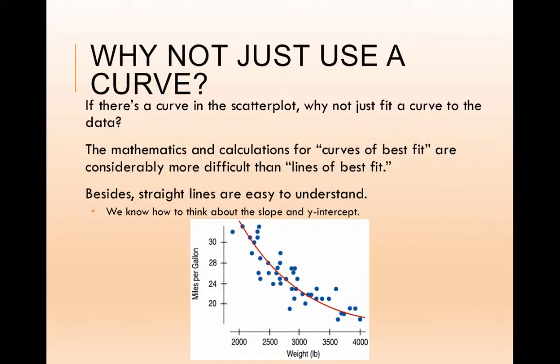But why not just use a curve? If there's a curve, just put a curve to it. The problem here is that the mathematics for a curved calculation or curves of best fit is a lot more difficult. It's more difficult to do and it's more difficult to interpret. Straight lines are easy to understand. We know how to think about the slope. We know how to think about the y-intercept. But as soon as we are changing slope to just a rate of change, which changes from data value to data value, it's hard to think about that. So we like to keep things straight.